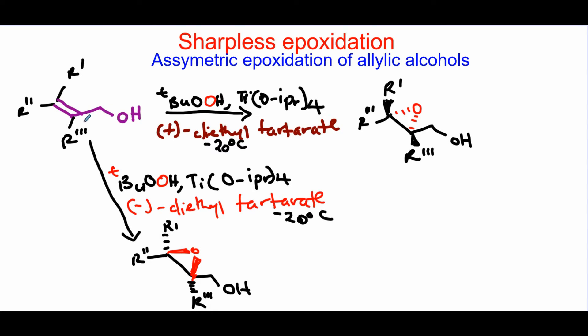This reaction was discovered by KB Sharpless, a professor at MIT in the 1980s. It's a good reaction because you get an epoxide, a specific enantiomer of the epoxide.